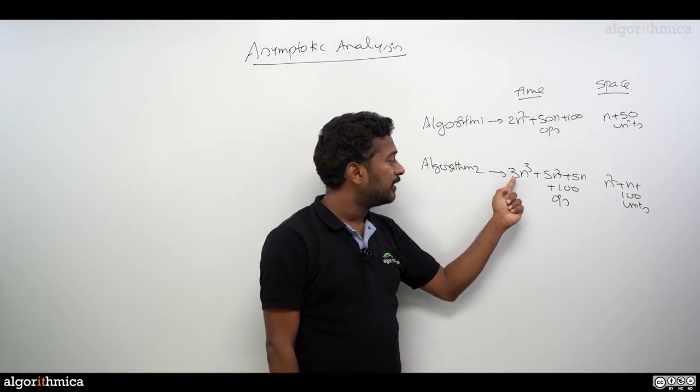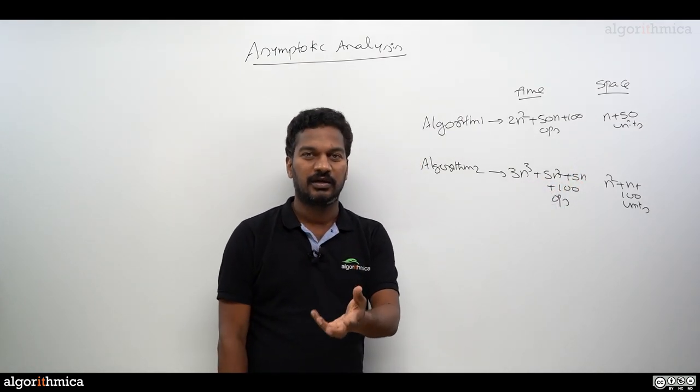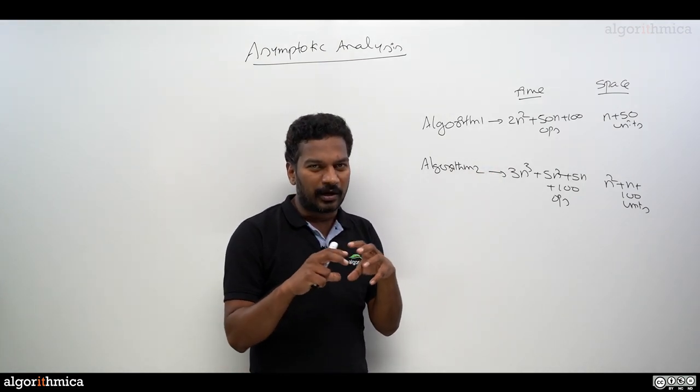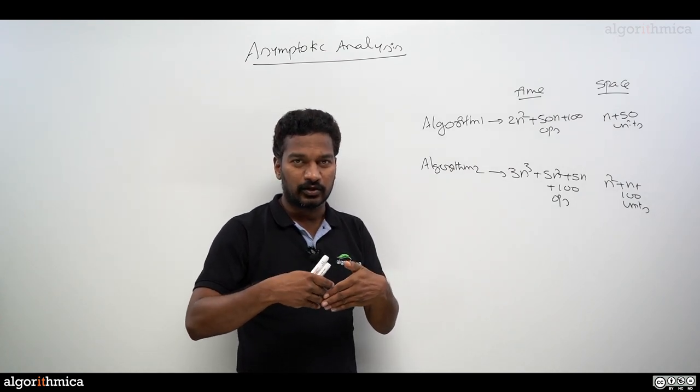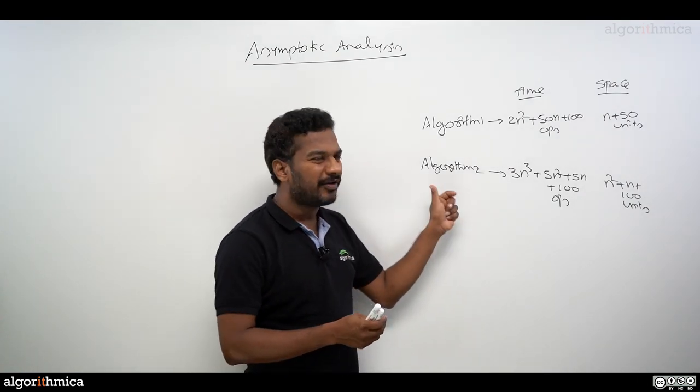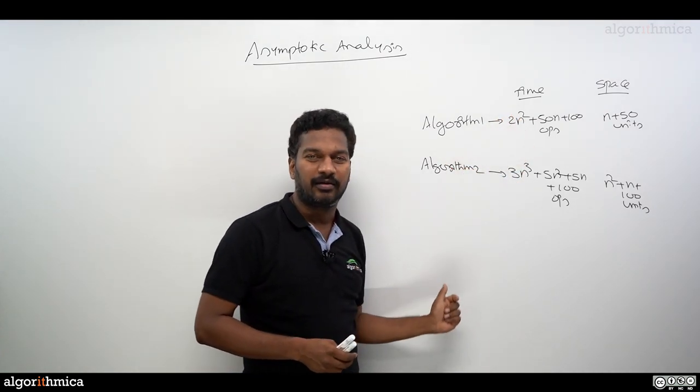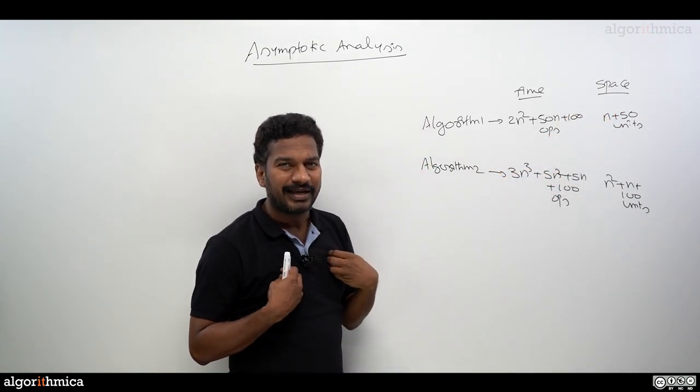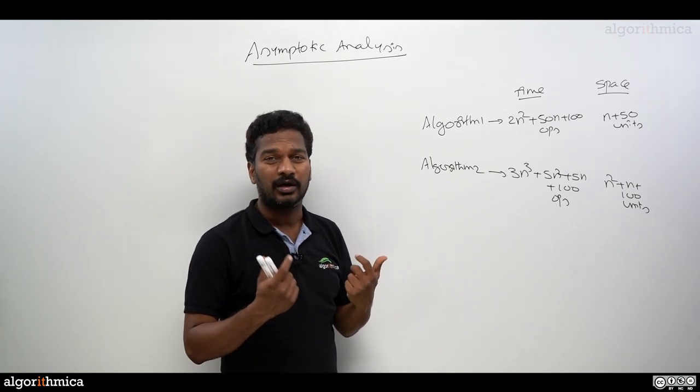If you want to communicate algorithms to other people in the community, 3n³ + 5n² + 5n + 100 operations my algorithm is taking. So this is the biggest pain to communicate this kind of very complex functions. When you analyze algorithms, is there any way we can simplify this kind of functions, both for time and for space? That's definitely helpful to all of us to communicate things so easily.